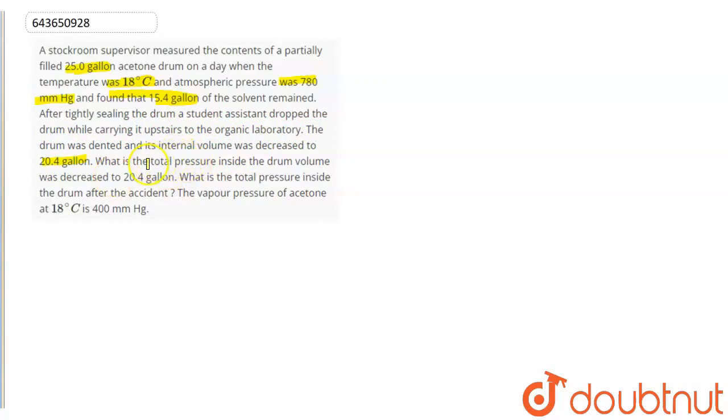What is the total pressure inside the drum after the volume was decreased to 20.4 gallons? What is the total pressure inside the drum after the accident? The vapor pressure of acetone at 18 degrees Celsius is 400 mmHg.